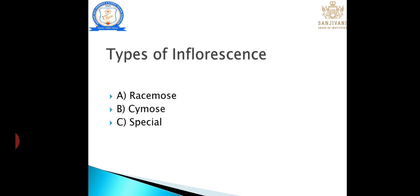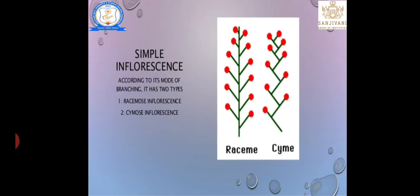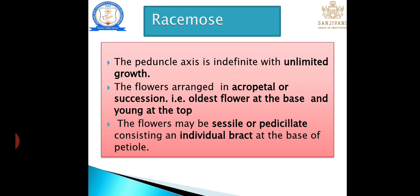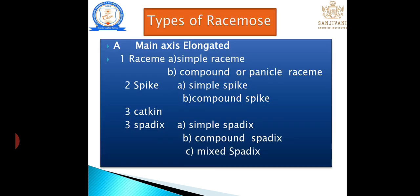The three types are: racemose, cymose, and special types. Racemose and cymose are the two main types, differentiated by special characters. In racemose, growth is unlimited; in cymose, growth is limited. Flowers are arranged in acropetal succession — the oldest flower at the base and the youngest flower at the top. Flowers may be sessile or pedicellate, and have individual bracts at the base of the pedicel.